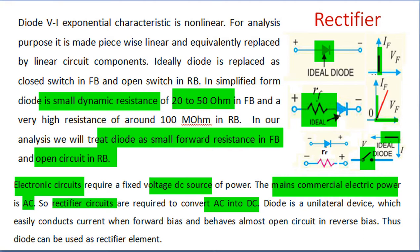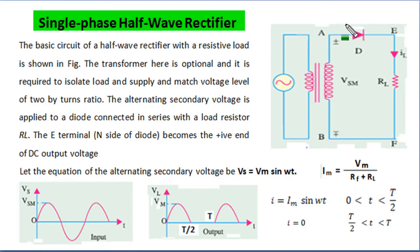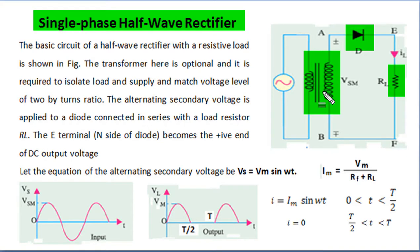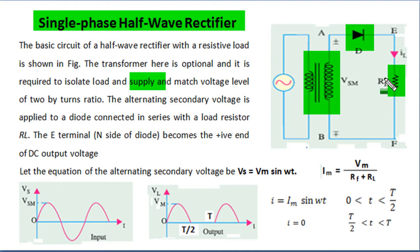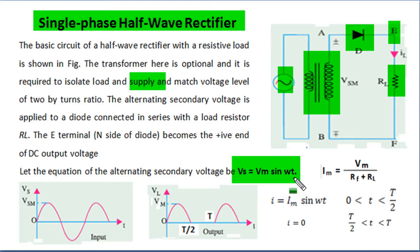Let's start the single phase half wave rectifier. In this, the diode is connected in series with the load resistance. This transformer is optional — it is used to match the supply and the load voltage. If we don't want to match supply and load voltage, we can remove the transformer and connect the diode directly to the load resistance. The transformer also provides DC isolation between the supply and the load.